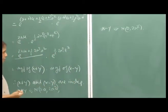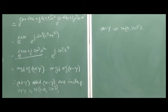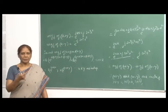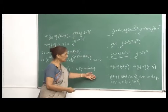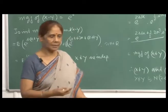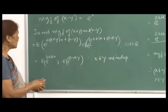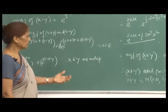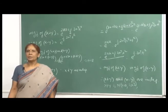Since the joint MGF factors as the product of the individual MGFs of x+y and x-y, by our theorem, x+y and x-y are independent. We conclude x+y ~ Normal(2mu, 2sigma^2) and x-y ~ Normal(0, 2sigma^2), and they are independent. This demonstrates that the joint MGF method can sometimes be easier and faster than transformation methods. This is an important tool when other methods do not work.